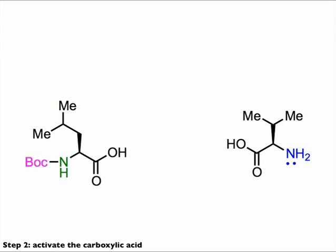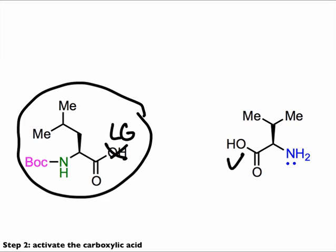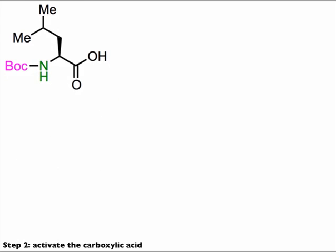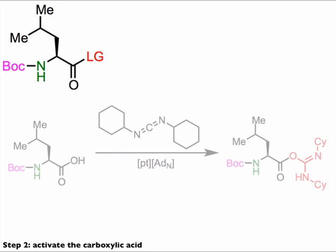Isolating the electrophile is as simple as only activating one of the carboxylic acid groups — one acid is made into a good electrophile, and the other is left as the relatively inert carboxylic acid group. We want the N-terminal amino acid's carboxylic acid to act as the electrophile in the coupling, so we only activate the Boc-protected N-terminus. In practice, the reagent used to activate carboxylic acids is a strong electrophile: dicyclohexylcarbodiimide, or DCC.